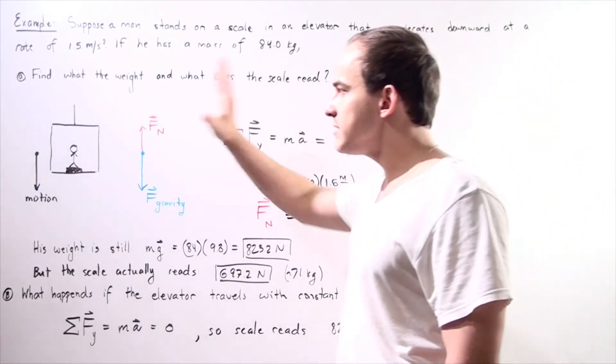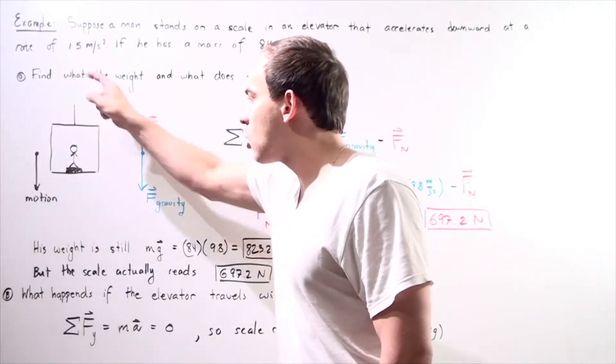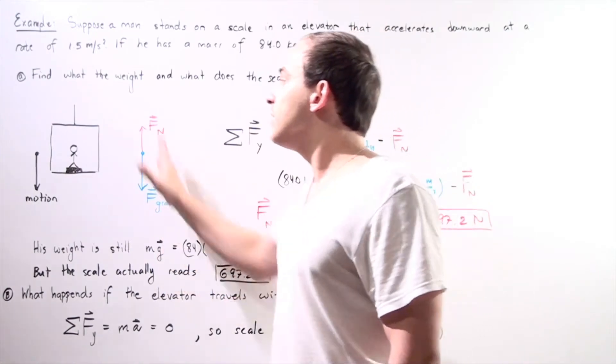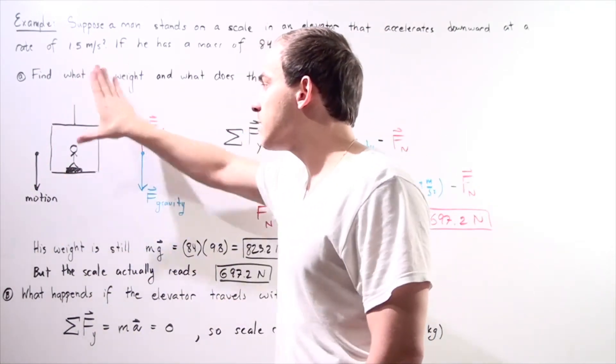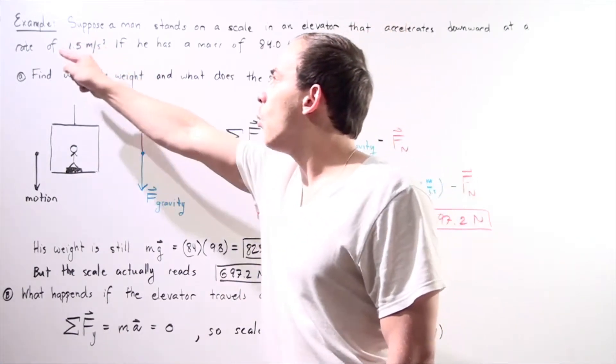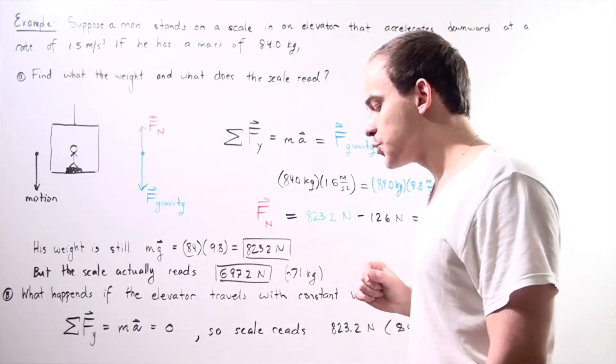Here's our system. We have the elevator cart, we have the person inside the elevator standing on top of a scale, and the entire system, the elevator and the person, are moving downward with an acceleration of 1.5 meters per second squared.